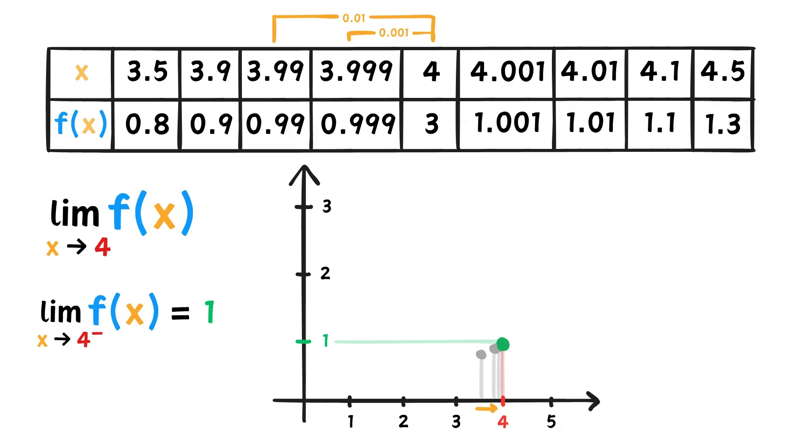Also, notice that it is possible that somewhere between 3.999 and 4, there's a massive spike or something unexpected. So the limit might be something else. But from what we can see on the table, 1 is a really good estimate for a one-sided limit. And lastly, notice that although the function value does exist, the limit is not 3. Remember, the limit is not dependent on the value of the function.